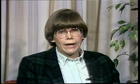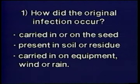Once you have accurately identified the disease, it is possible to look up basic information on that particular disease cycle. There are four points you should consider. First, it is important to know how the original infection occurred. Was the pathogen carried in or on the seed? Was the pathogen present in the soil or in residue left in the field? Was the pathogen carried in on equipment, blown in by wind, or splashed in by rain?